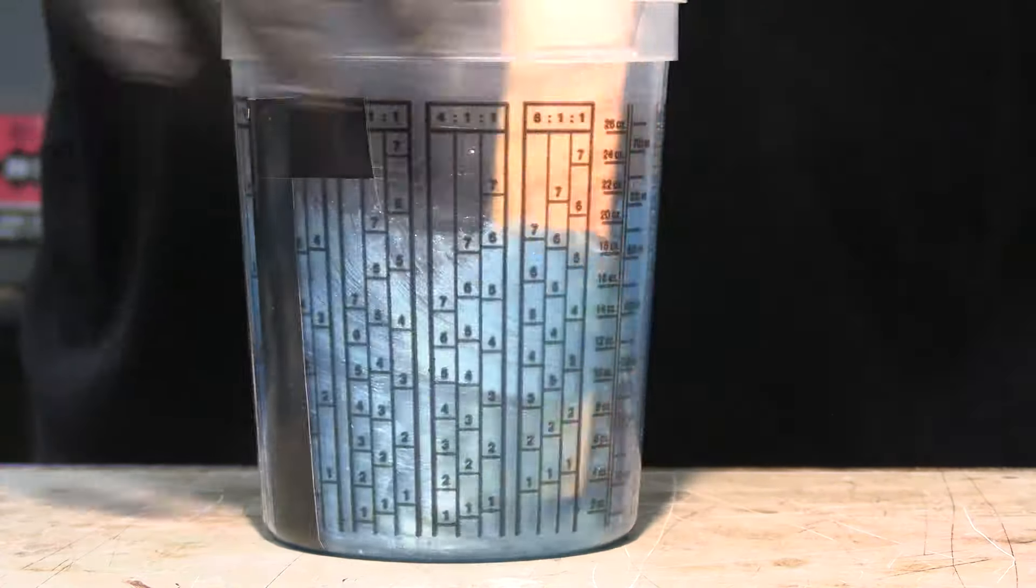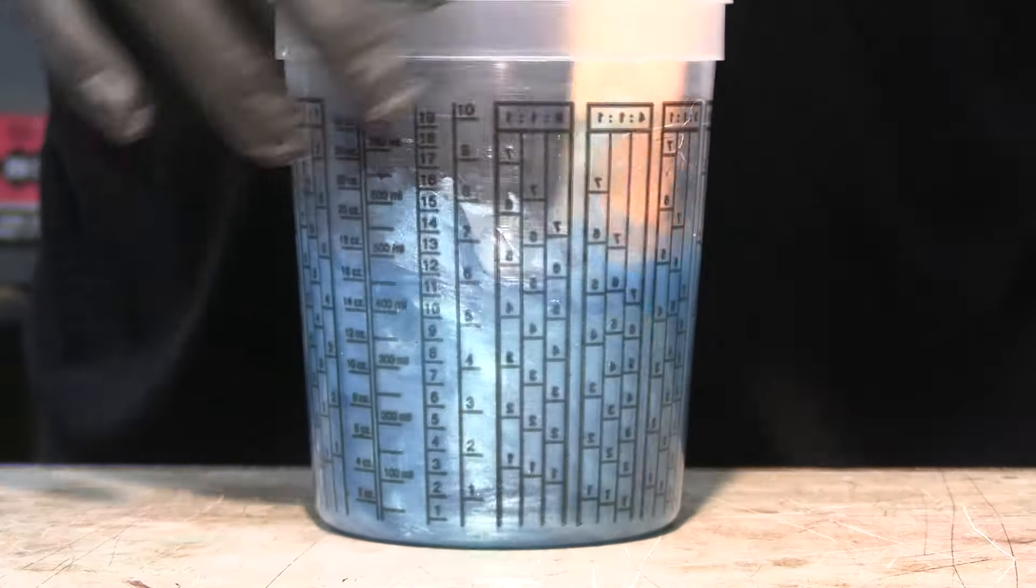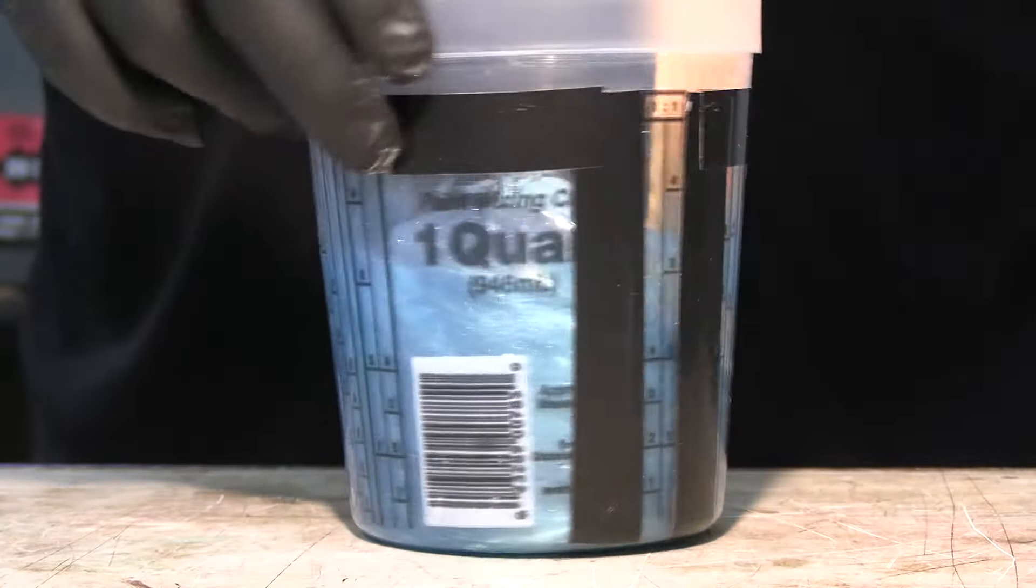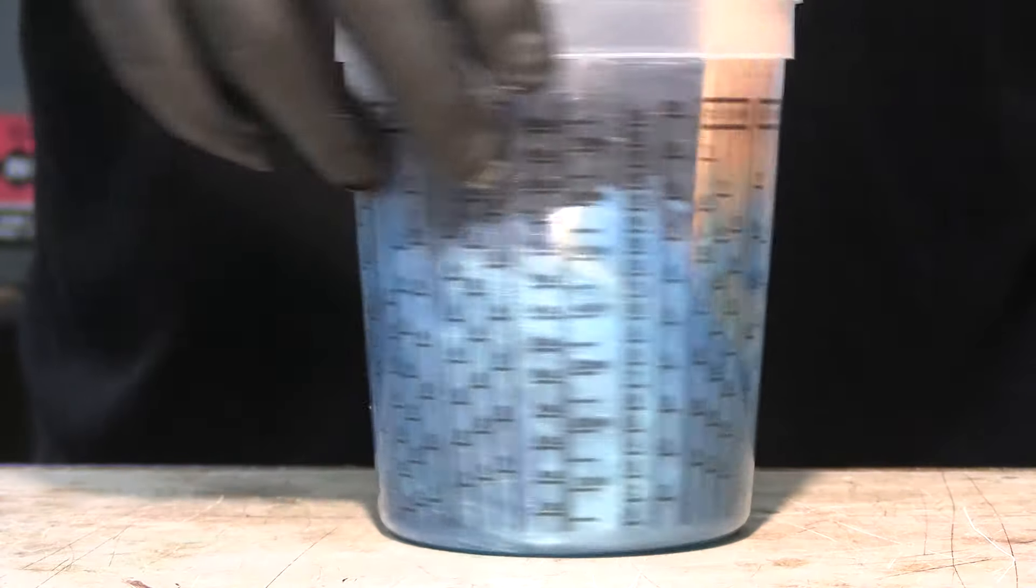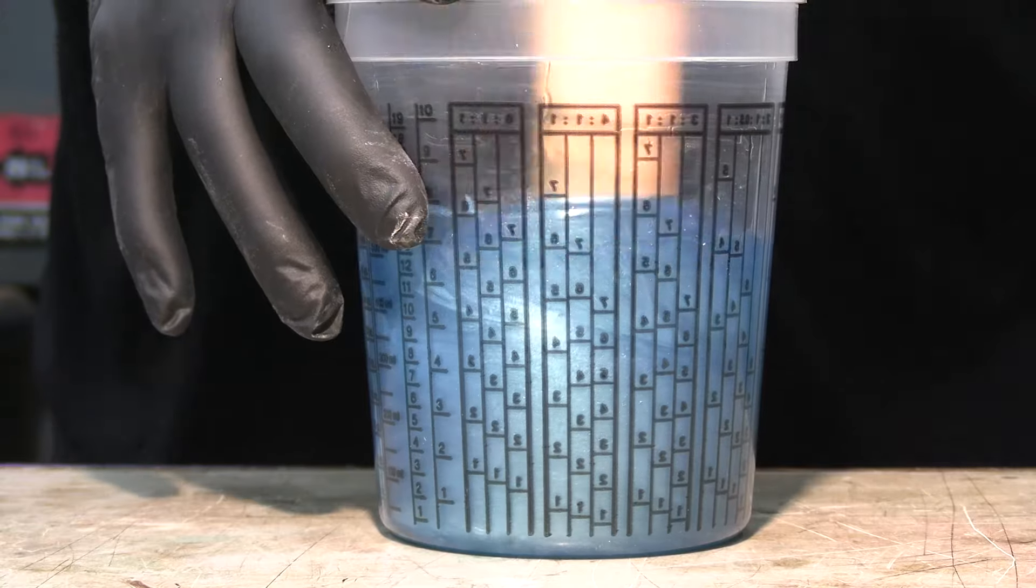One thing also, make sure that you scrape the side walls of your bucket and the very bottom of your container as well. If you don't, you might have some uncured resin in those spots, so make sure you do that while you're mixing.